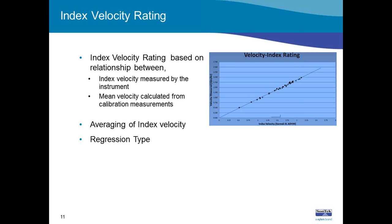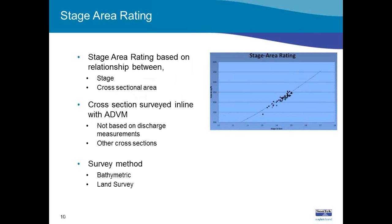Before we move on, there was a question about the chart axes, which are hard to read. On the x-axis is the index velocity parameter, and on the y-axis is the mean velocity parameter. The previous axes were for the stage-area rating — x-axis was stage and y-axis was area. Thanks for that question.